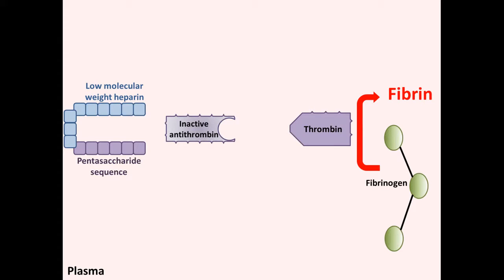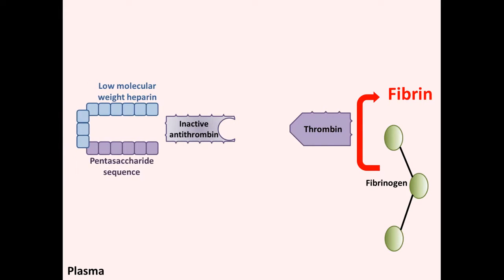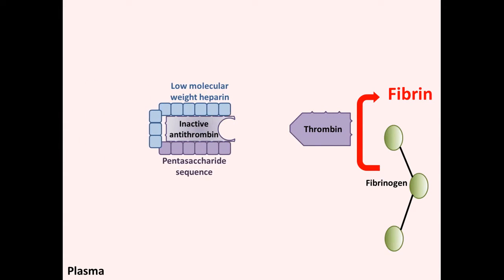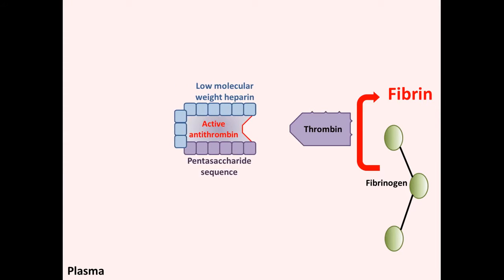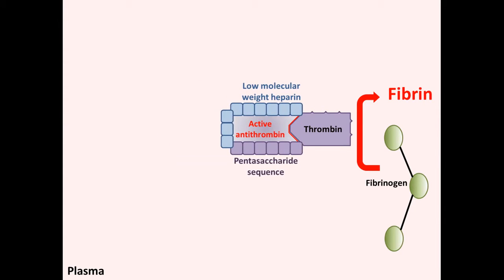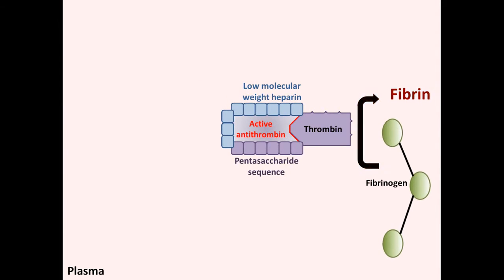However, with low molecular weight heparin, it does bind to the inactive antithrombin, activating it. This accelerates the interaction between the active antithrombin and thrombin, which is responsible for the inhibition of fibrin production from fibrinogen.